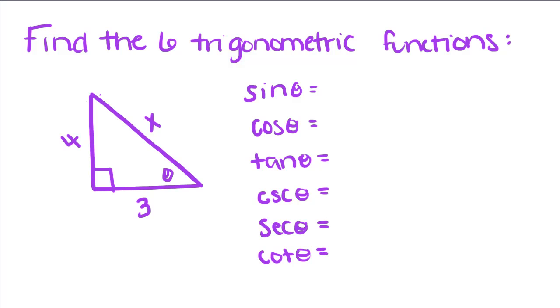So, we have this triangle right here, and we're going to find the six trigonometric functions of this. All we're going to do is fill in what all these equal. The first thing we need to know is what X equals. So,